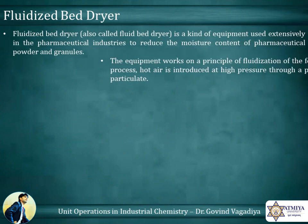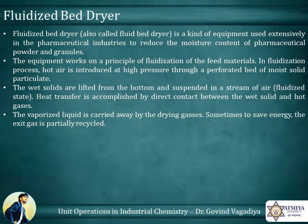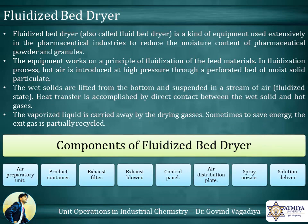The fluidized bed dryer is a kind of equipment used extensively in the pharmaceutical industries to reduce the moisture content of pharmaceutical powder and granules. The equipment works on the principle of fluidization of feed materials. In the fluidization process, hot air is introduced at high pressure through a perforated bed of moist solid particulate. The wet solids are lifted from the bottom and suspended in a stream of air in a fluidized state. Heat transfer is accomplished by direct contact between the wet solid and hot gases. The vaporized liquid is carried away by the drying gases. Sometimes, to save energy, the exit gas is partially recycled.